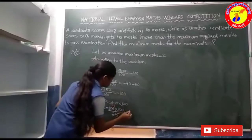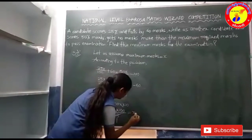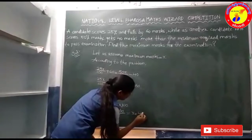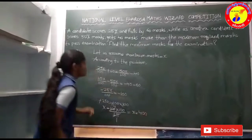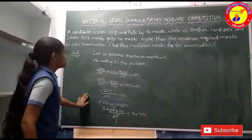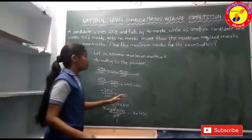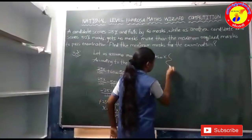So X is equal to 400. This is the long process of solving this problem. Now we will discuss the short method.